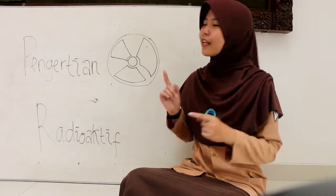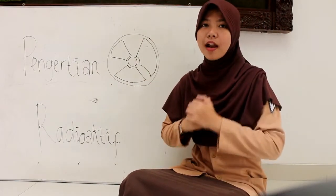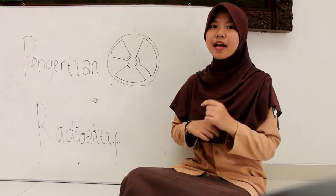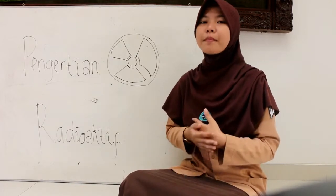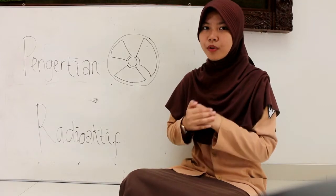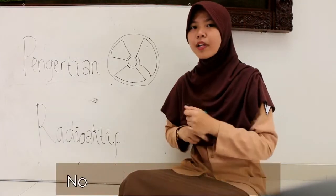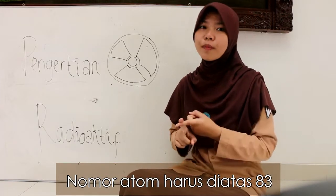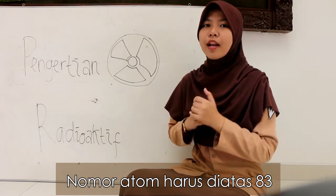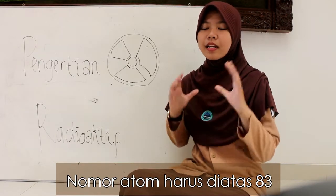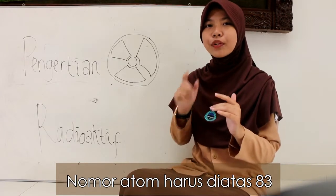Oke, sekarang kita akan membahas tentang pengetahuan radioaktif. Radioaktif adalah unsur yang biasanya memancarkan sinarnya secara spontan. Biasanya unsur-unsur tersebut memiliki atom yang di atas 83. Contohnya, ada uranium. Uranium ini nomor atomnya di atas 83. Jadi, di mana-mana yang namanya radioaktif itu harus memiliki atom yang di atas 83.